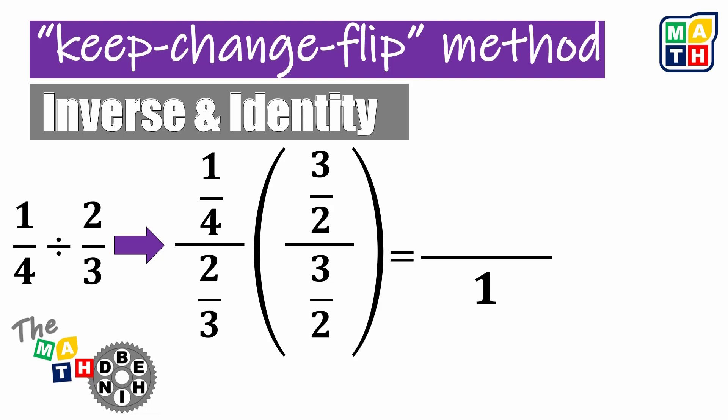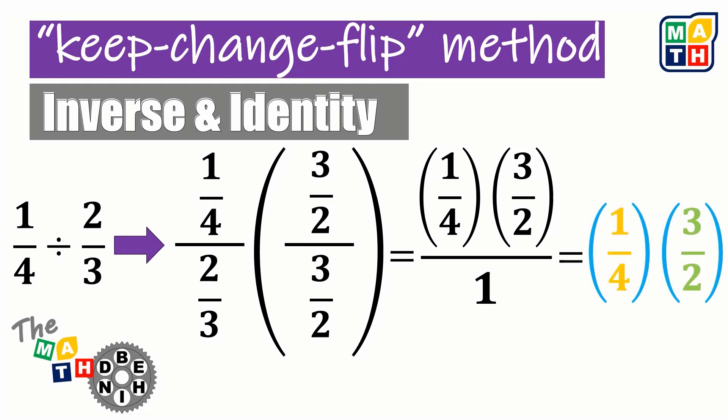As for the numerators, we will now have 1 fourth times 3 halves. If we are going to just continue with this, we all know that any denominator 1 could be simplified. That's why our final result is just a product of 1 fourth and 3 halves.